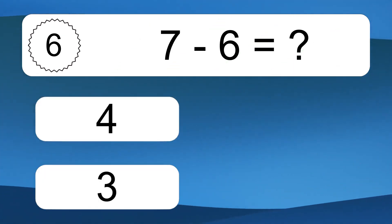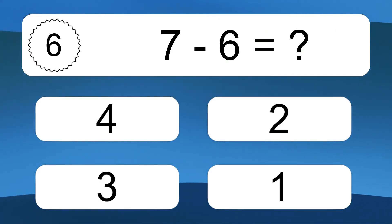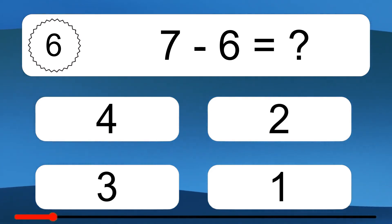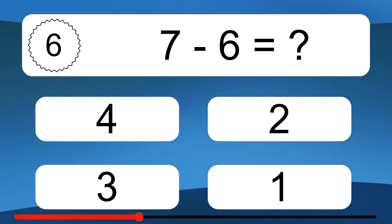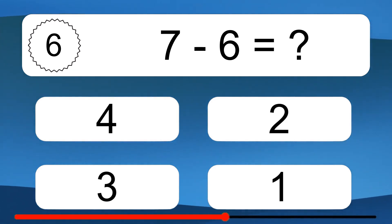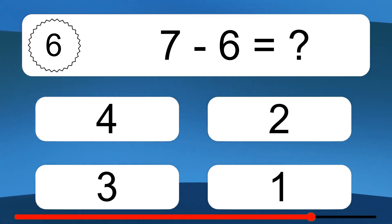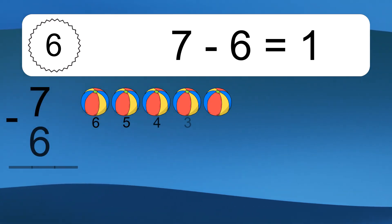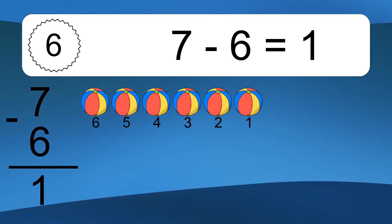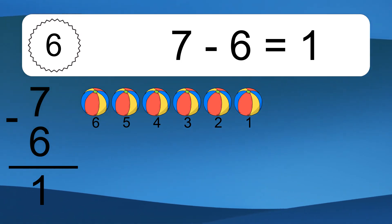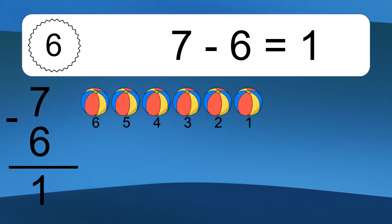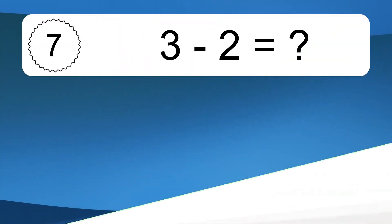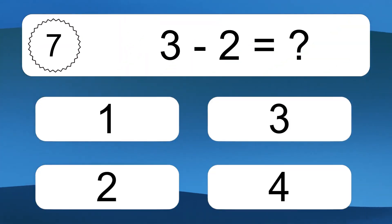7 minus 6 equals what? 7 minus 6 equals 1. Let's count it: 6, 5, 4, 3, 2, 1.